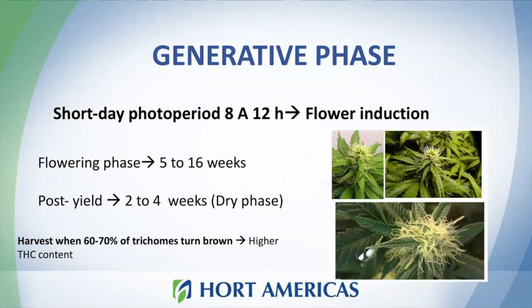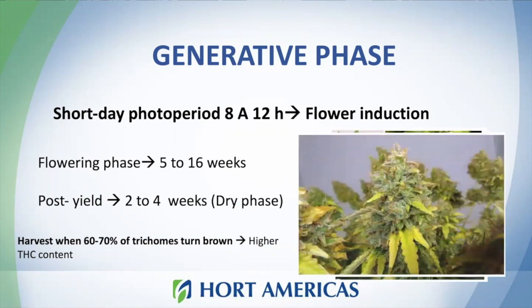When the vegetative phase period ends it's time to induce flowering by exposing plants to shorter photoperiods, from eight to 12 hours. Flowering phase can last from five to 16 weeks, during which our plants will be producing flowers. After this our plants will be ready for harvest. We usually see a change in the plant — trichomes turn brown and leaves can also turn yellow.